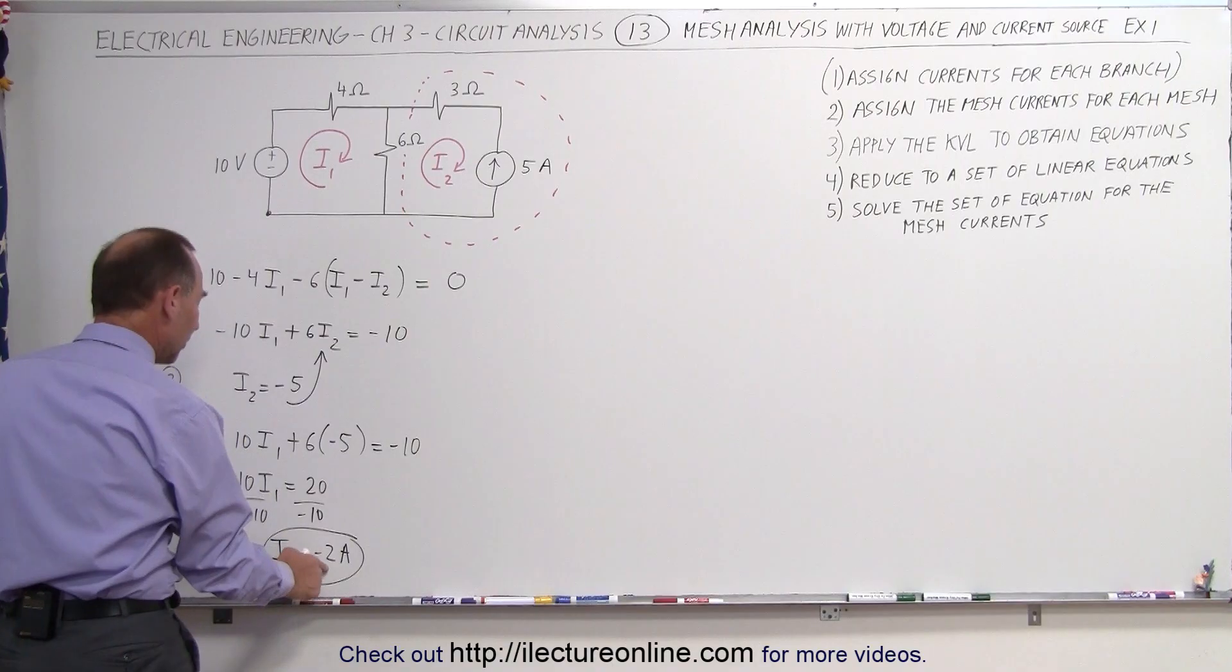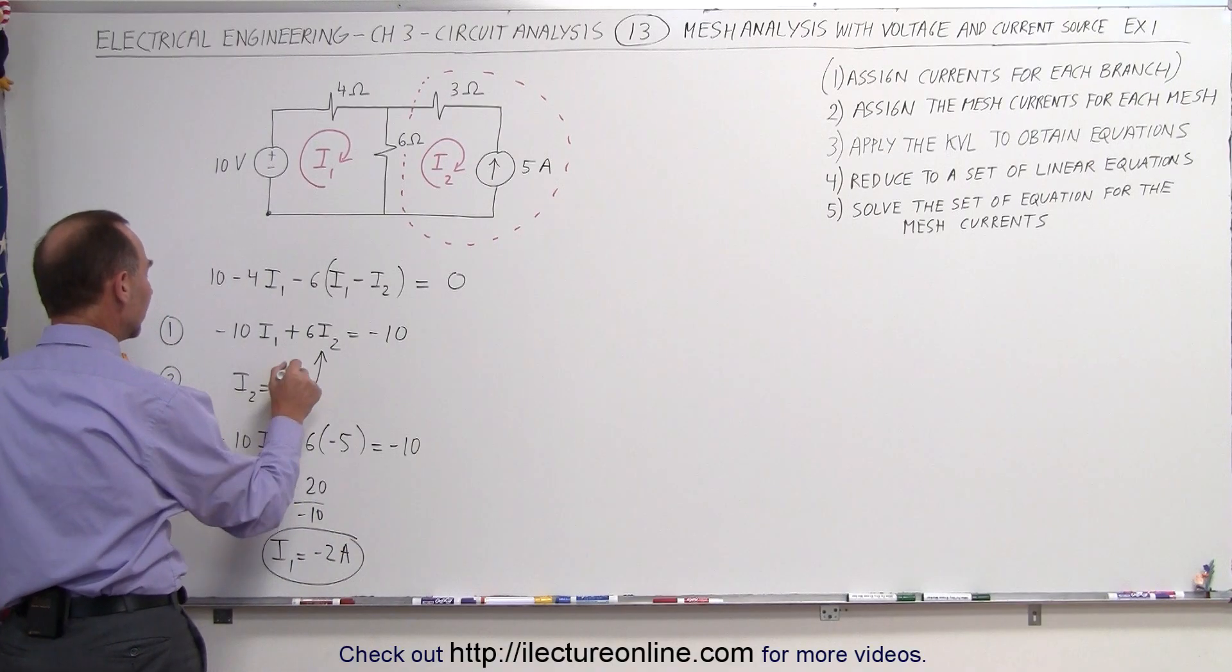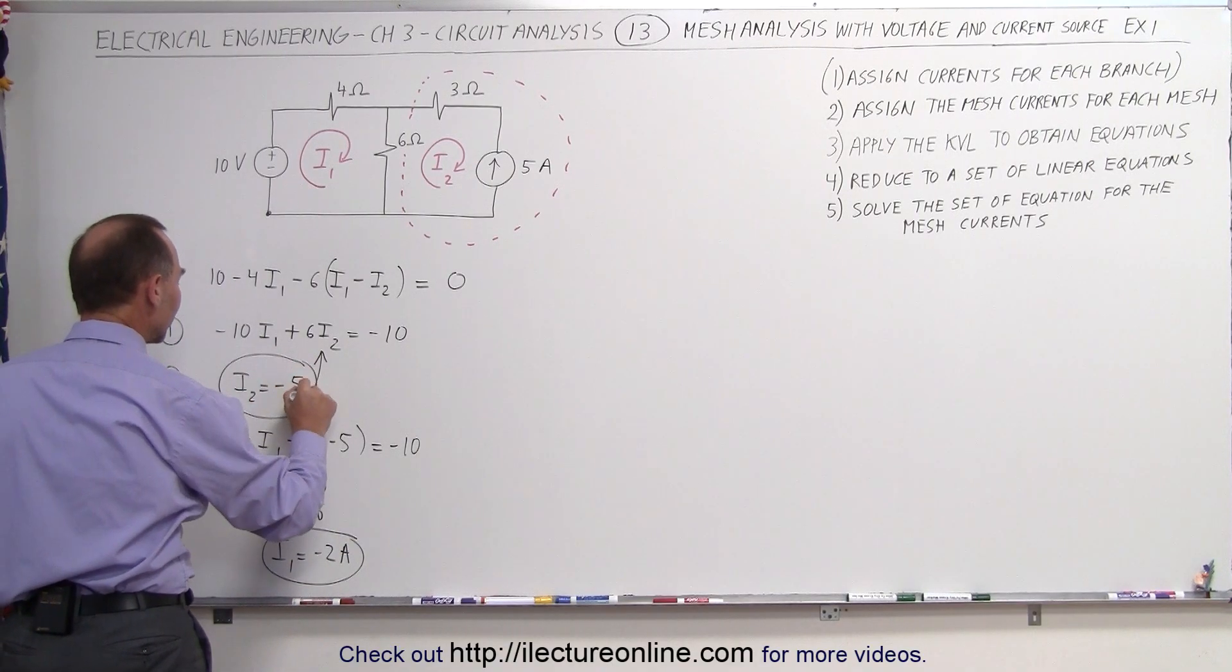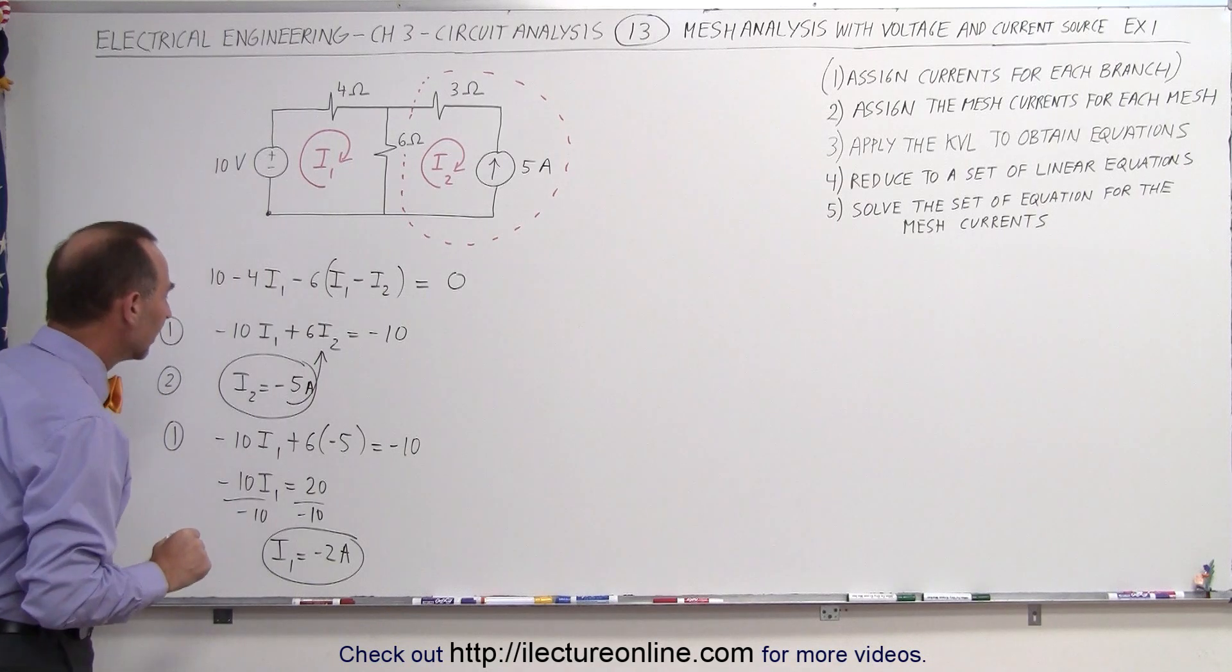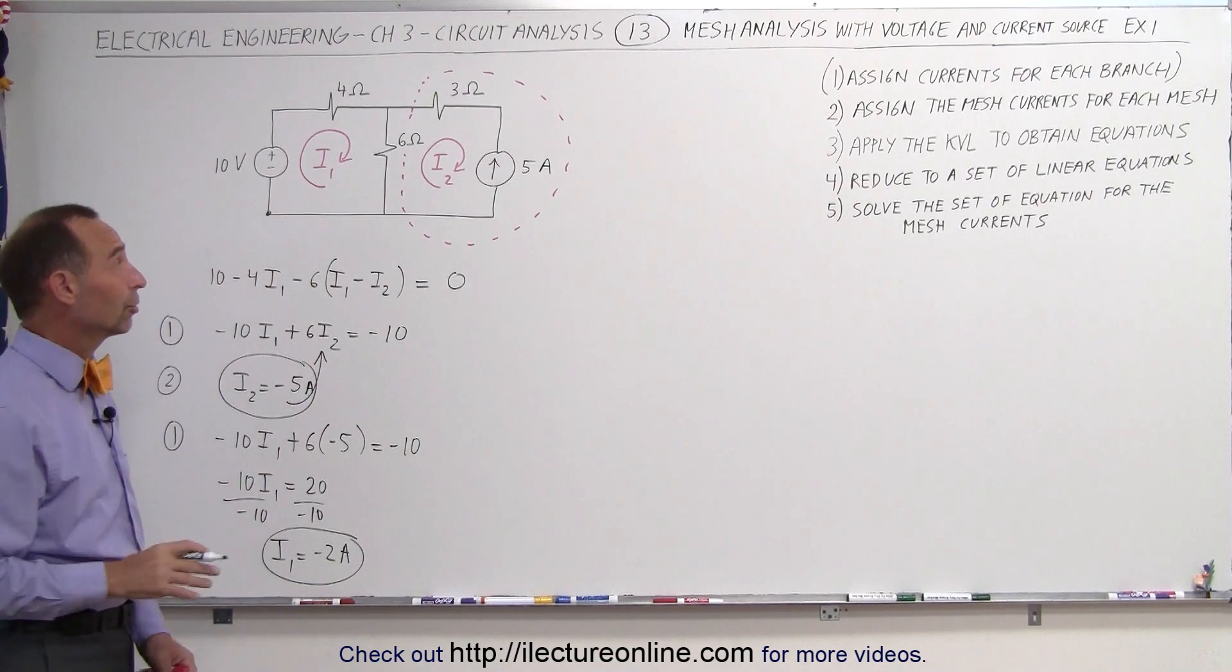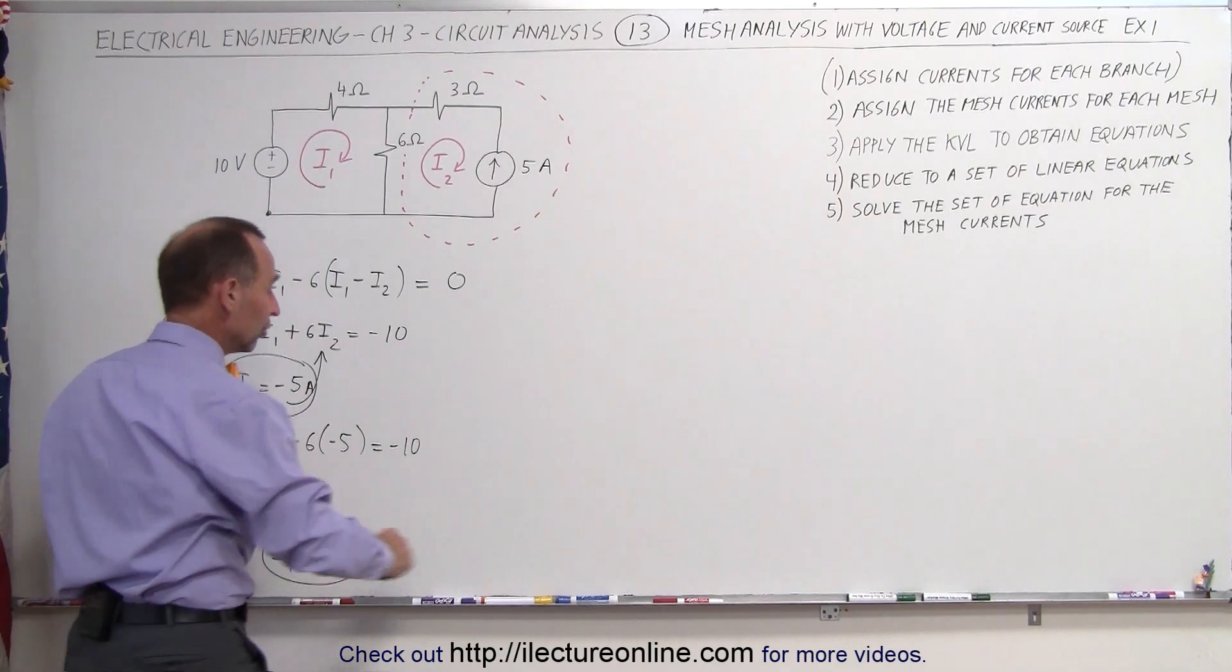Since I1 is minus 2 amps and I2 equals minus 5 amps, now we have solved for our two mesh currents, which means we can find the current in each of the branches.